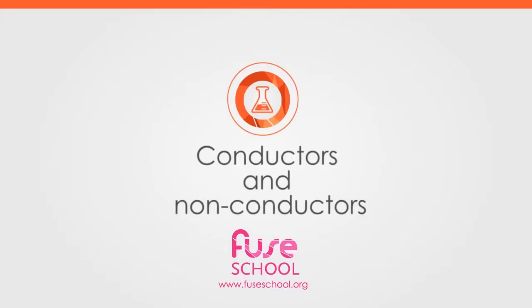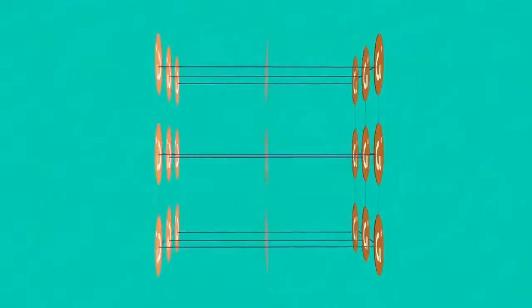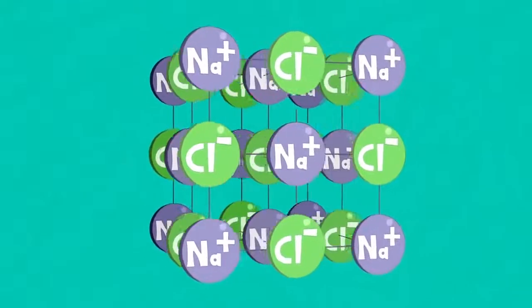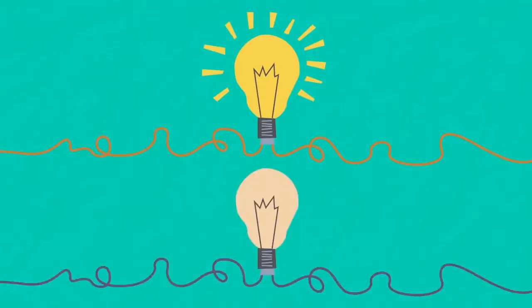In this video we're going to learn about the differences between chemical structures of a conductor and a non-conductor. This will be used to explain why different solids do and do not conduct electricity.